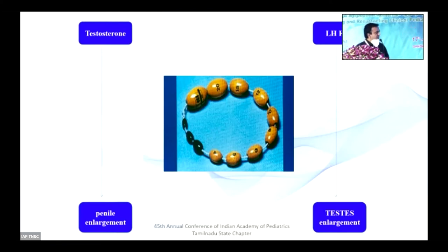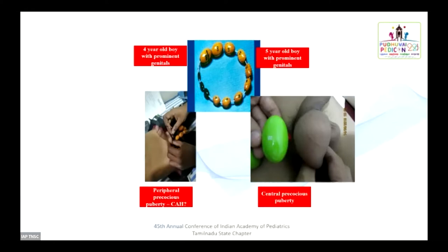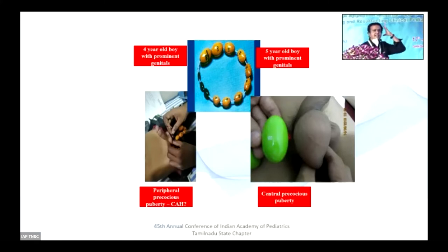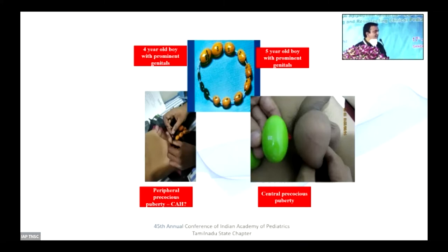Testosterone is responsible for penile enlargement, while LH and FSH produced by the pituitary gland are responsible for testicular enlargement. Whenever you have a large testis and prominent genitalia, the gonadotrophins are very high — you're looking at central precocious puberty. However, if you see an enlarged penis but a normal pre-pubertal testis, the testis is not the culprit. The androgen could be coming from the adrenal gland — it could be CAH. A large testis, on the other hand, points to a central cause.